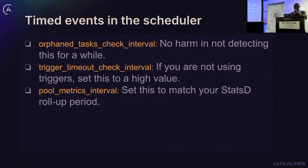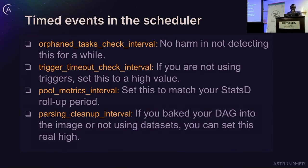Another timed event is trigger timeout check interval — this is not useful unless you are using triggers, and it runs roughly every five minutes, so set it to a very high value if you are not using triggers. Then there is pool metrics interval: if you are using StatsD, set this to match the rollup period since it runs queries at regular intervals. There is also parsing cleanup interval — if you don't use datasets, increase it to a very high value so it doesn't slow your scheduler loop.